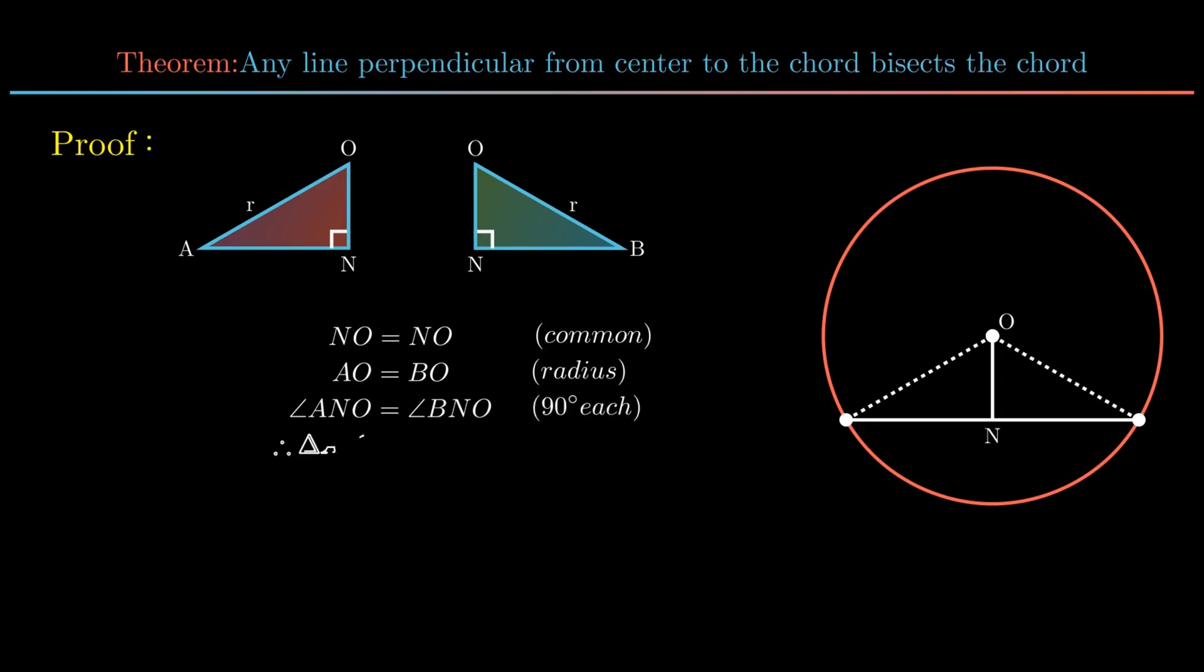Therefore by RHS congruency, triangle ANO is congruent to triangle BNO. Hence by corresponding parts of the congruent triangle, we conclude side AN is equal to side NB. Hence the theorem is proved.